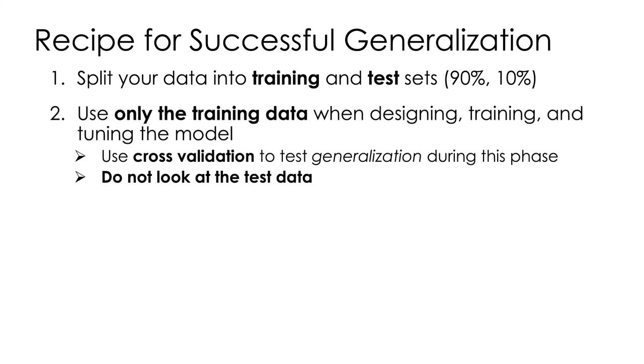I want to give you a recipe for successful generalization. The first and most important step is split your training data into a training and test data set, 90% ideally for training and maybe 10% for test. Then only use the training data when designing, training, and tuning your model. You do not look at the test data when making modeling decisions.